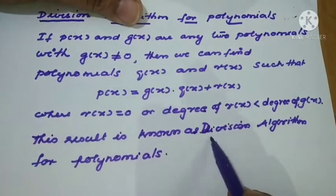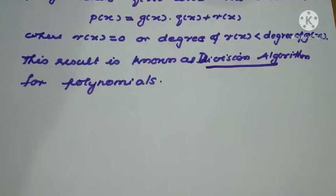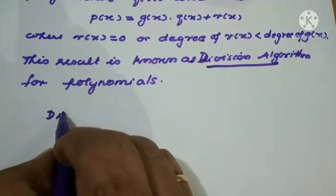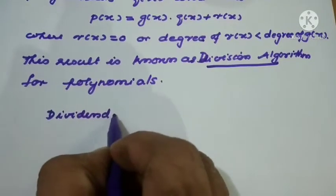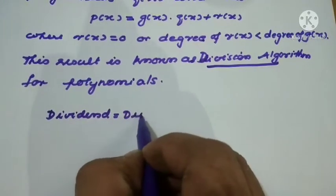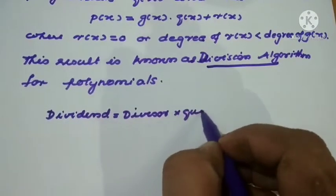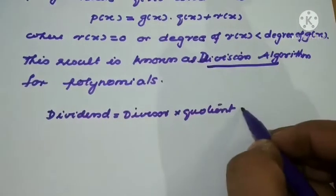This result is known as the division algorithm for polynomials. It is nothing else but our division algorithm for normal division only. When normal division is there, we know one rule: dividend equals divisor into quotient plus remainder.